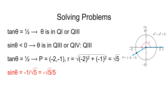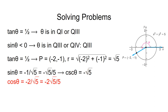Sine theta equals y over r, so it equals minus 1 over the square root of 5, which when rationalized gives minus square root of 5 over 5. Cosine theta equals x over r, so it equals minus 2 over the square root of 5, which rationalized is minus 2 square roots of 5 over 5. The secant of theta is the reciprocal of cosine theta, so it equals minus square root of 5 over 2. The cotangent of theta is the reciprocal of tangent theta, which we already know is 1/2, so cotangent theta equals 2.